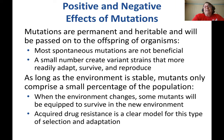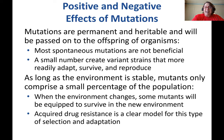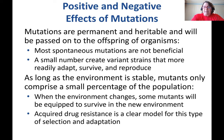Mutations are permanent and heritable and will be passed on to offspring. Most spontaneous mutations are not beneficial. A very small number will create variant strains that are more readily able to adapt, survive, and reproduce, especially if the environment changes. As long as the environment is stable, mutants will only be a small part of the population. But if there is a massive environmental change, some mutants will be better prepared to survive it, and the old strain will start to die off while the mutant strain becomes the major strain.